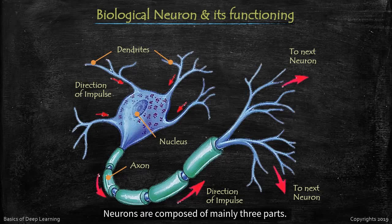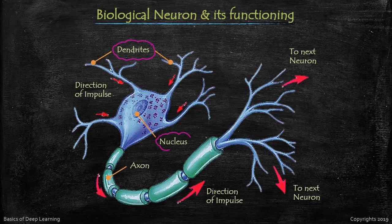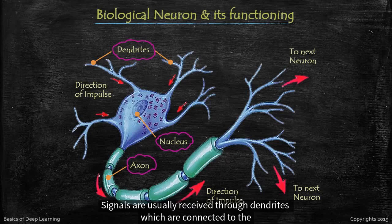Neurons are composed of mainly three parts. First is dendrite, so I'll just mark it on the screen. Second is nucleus, and third is an axon. Signals are usually received through dendrites which are connected to the other neurons.